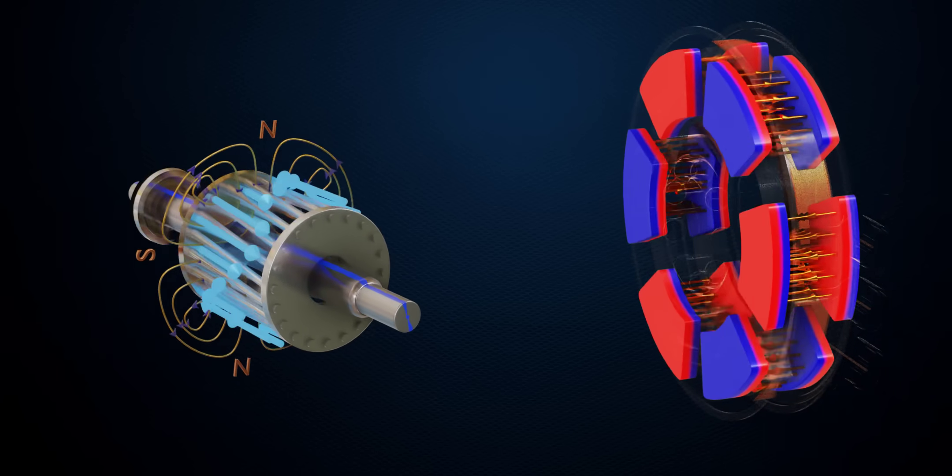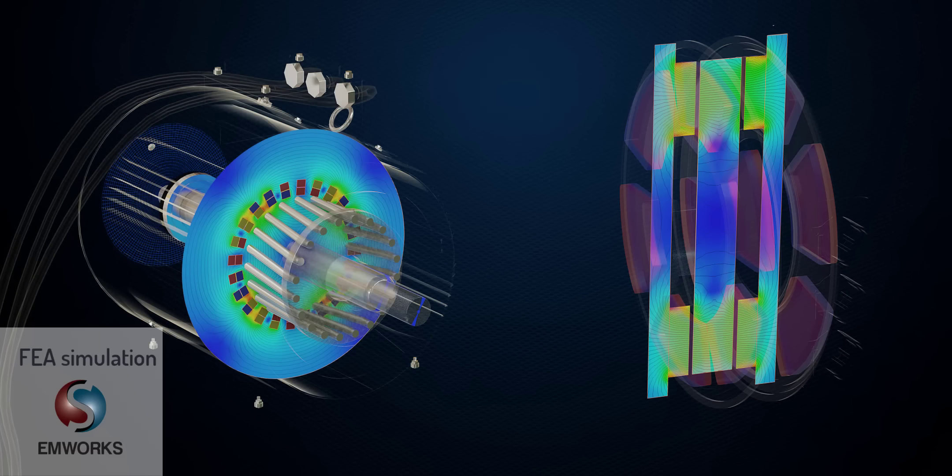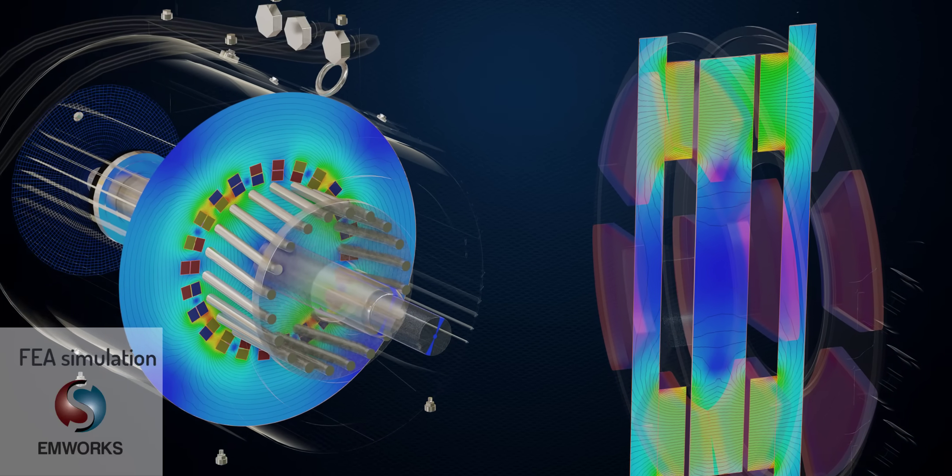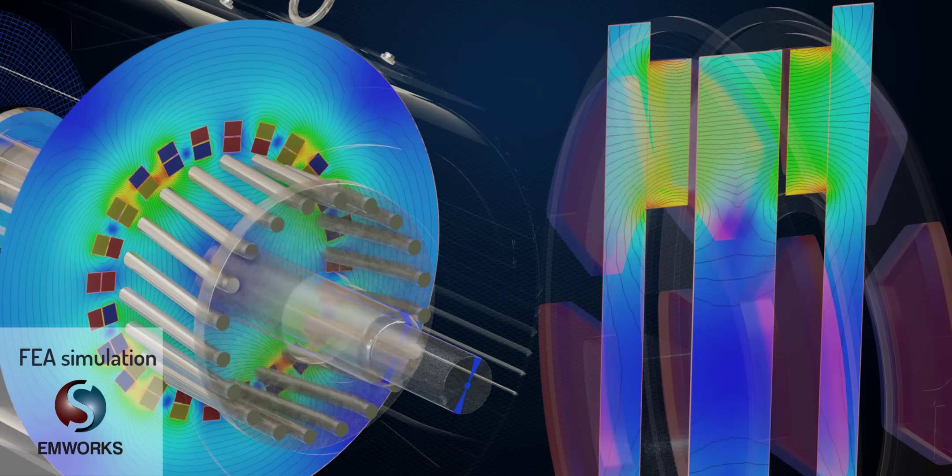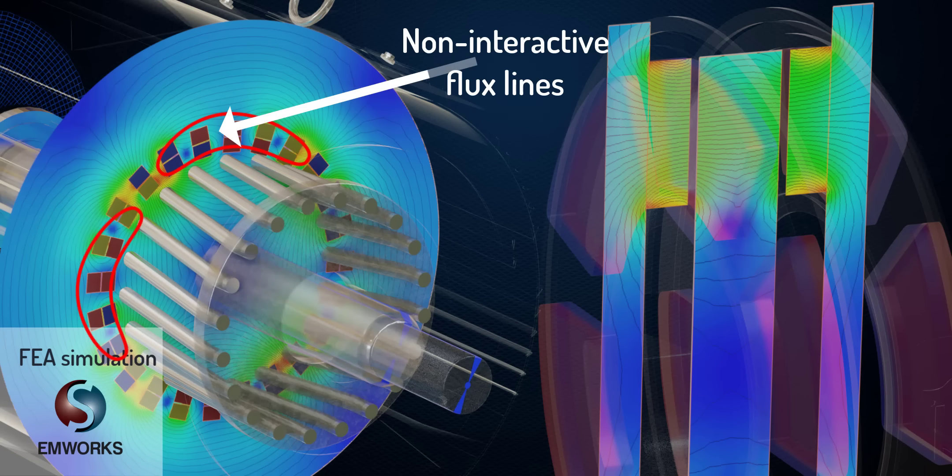To confirm the flux paths, let's take help from the FEA. Here is an FEA result in EMWorks 2D software paired alongside SolidWorks. The interaction between rotor and the stator magnetic field generates torque. Here, some field loops rarely interact with the rotor.